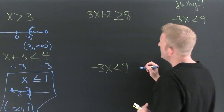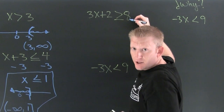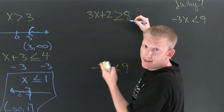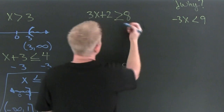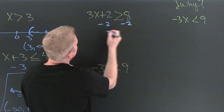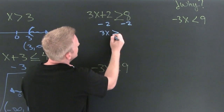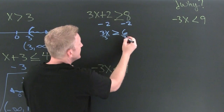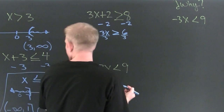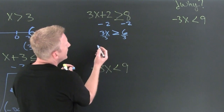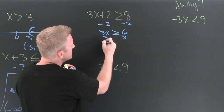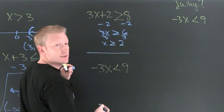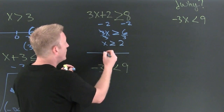Now let's put both rules together — the additive rule and the multiplicative rule. These inequalities solve just like the equalities except for one step. This is not that kind. Subtract two from both sides: 3x is bigger than or equal to six. Divide both sides by three — x is greater than or equal to two.